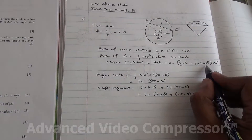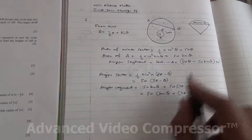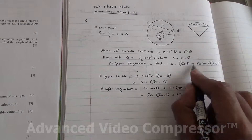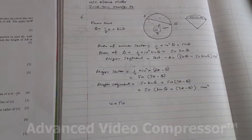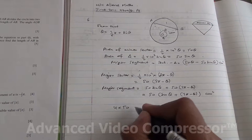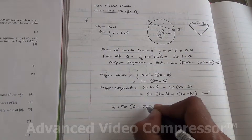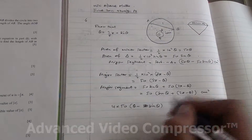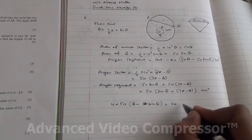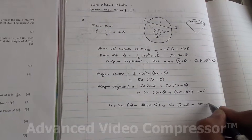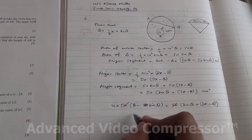We know that the major area is 4 times the minor area. So the major segment equals 4 times the minor segment. We can factorize 50 from the minor segment, giving 50 times 4 times (theta minus sine theta). Setting this equal to the major segment: 4 times (theta minus sine theta) equals sine theta plus (2 pi minus theta).